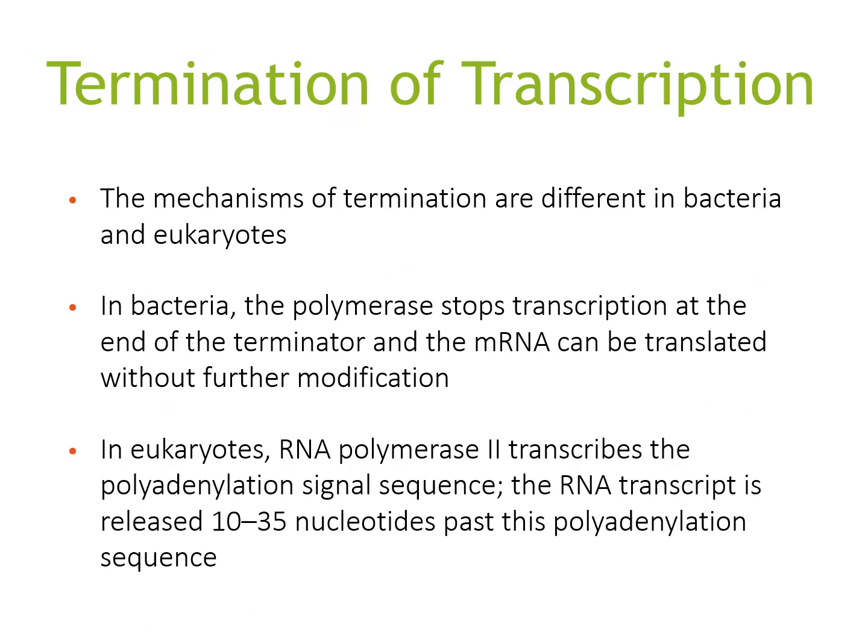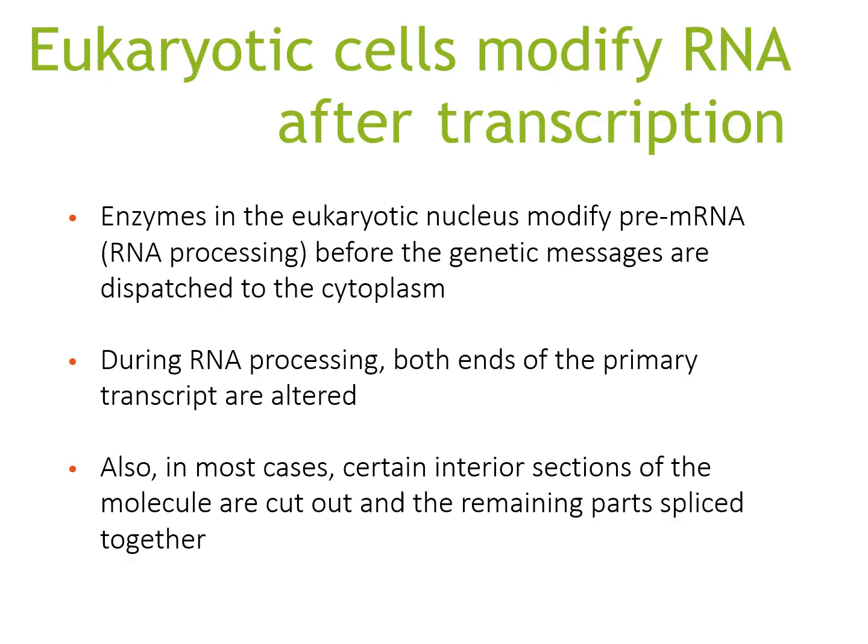The final stage of transcription is termination. The methods of termination differ in bacteria and eukaryotes. In bacteria, the polymerase stops transcription at the end of the terminator, and the mRNA can be translated without further modification. In eukaryotes, RNA polymerase II transcribes the polyadenylation signal sequence, and the RNA transcript is cleaved at least 10 to 35 nucleotides past this polyadenylation sequence.